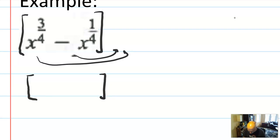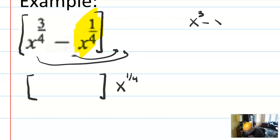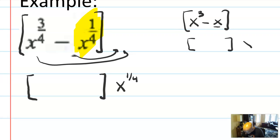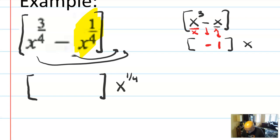The thing I'm going to pull out is x to the one-fourth. Imagine I had x cubed minus x in a bracket — I'd say the greatest common factor is x, pull that x out to the outside, then figure out what goes inside. With that easier problem, the negative sign stays. x divided by x is just 1, and x cubed over x is x squared. So you'd get x times the quantity x squared minus 1.